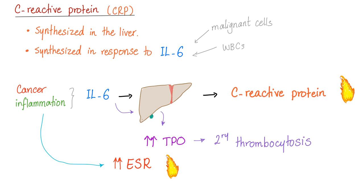Now let's talk about C-reactive protein. It's a protein, therefore it's synthesized in the liver. It's synthesized in response to interleukin-6, which is produced by white blood cells — especially macrophages — as well as malignant cells. So cancer or inflammation will produce interleukin-6, which stimulates the liver to produce CRP. When CRP is high, it means your body is on fire because interleukin-6 is elevated, signaling either infection or cancer. Inflammation also raises your ESR, which is why in inflammation you have both high ESR and high CRP.